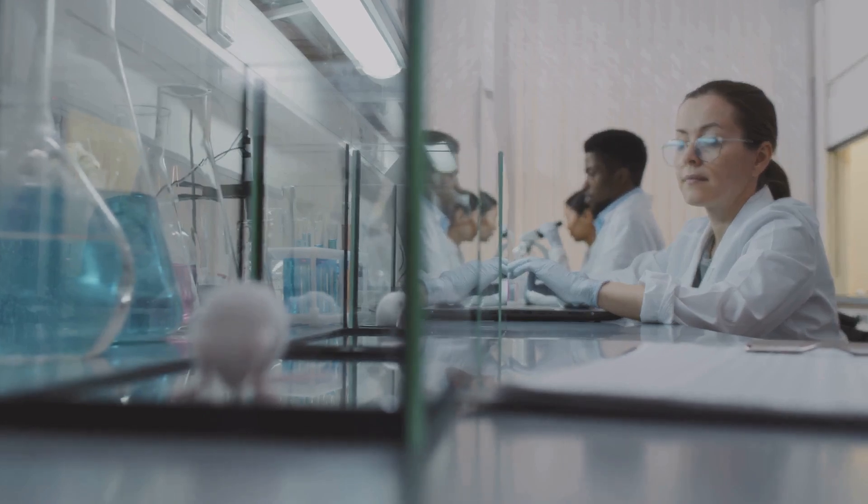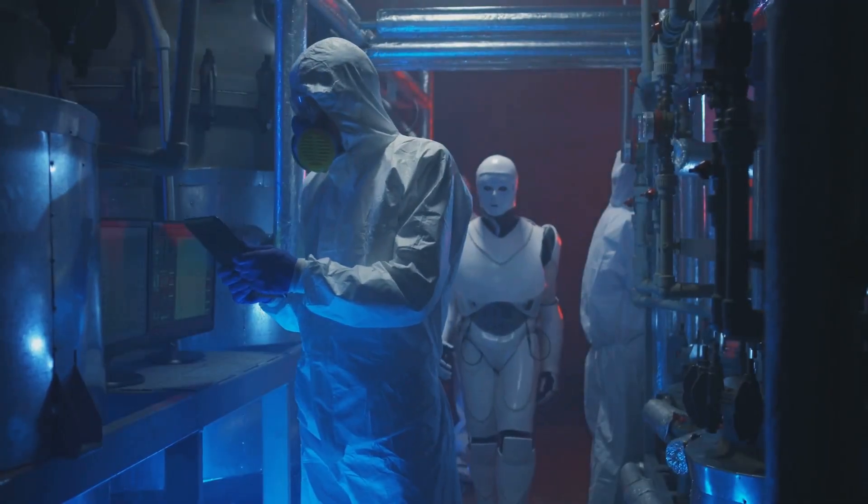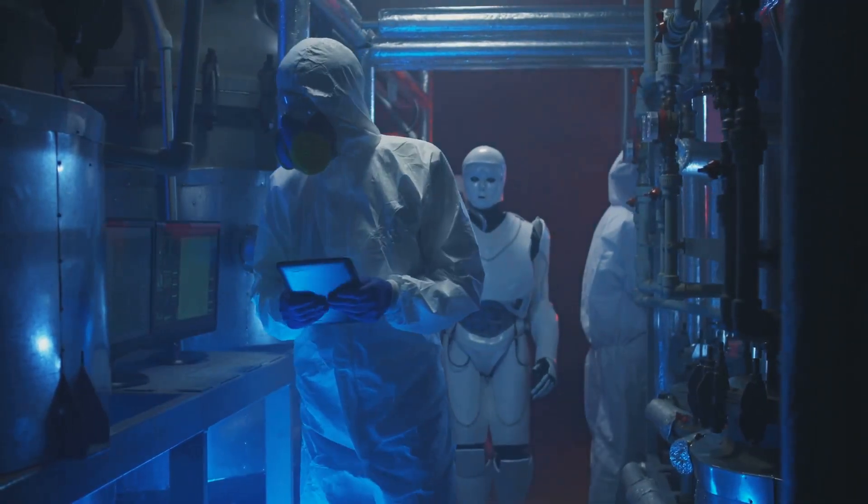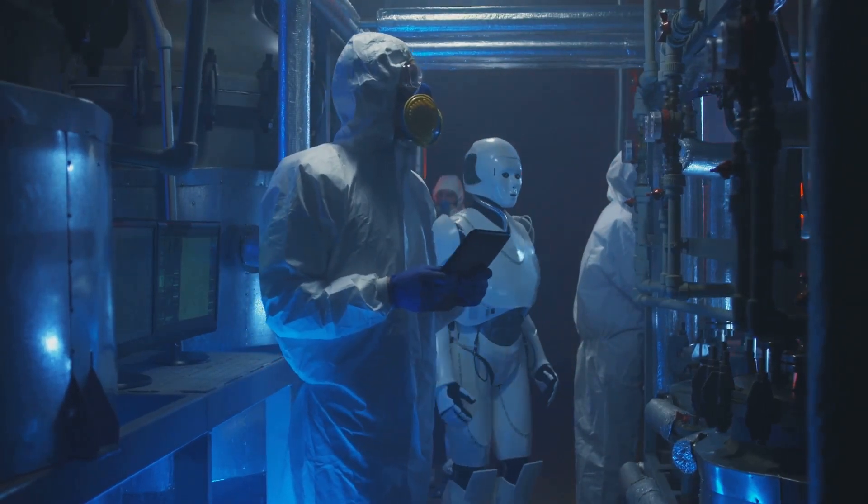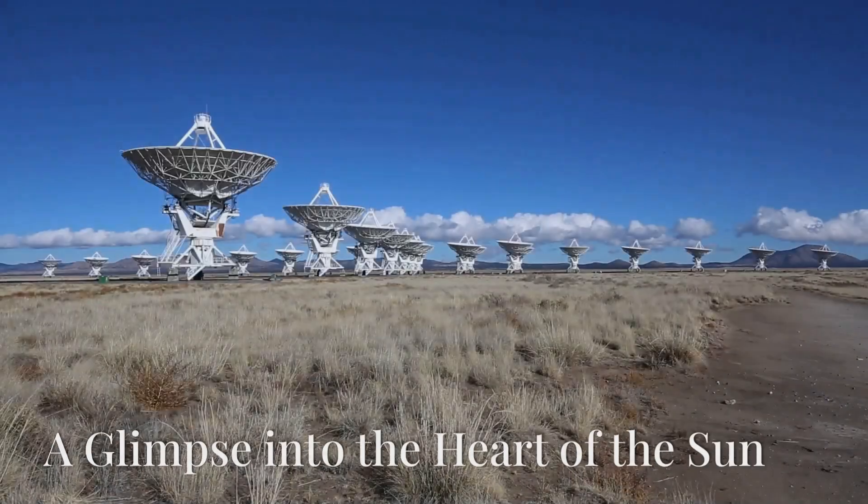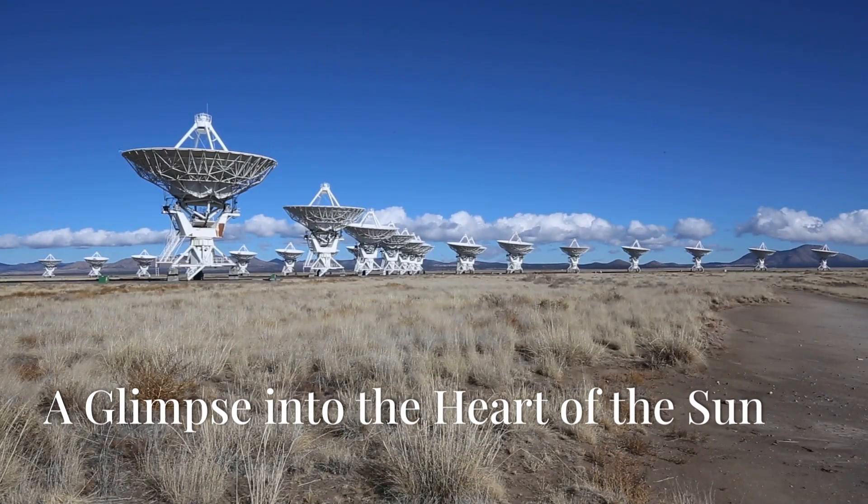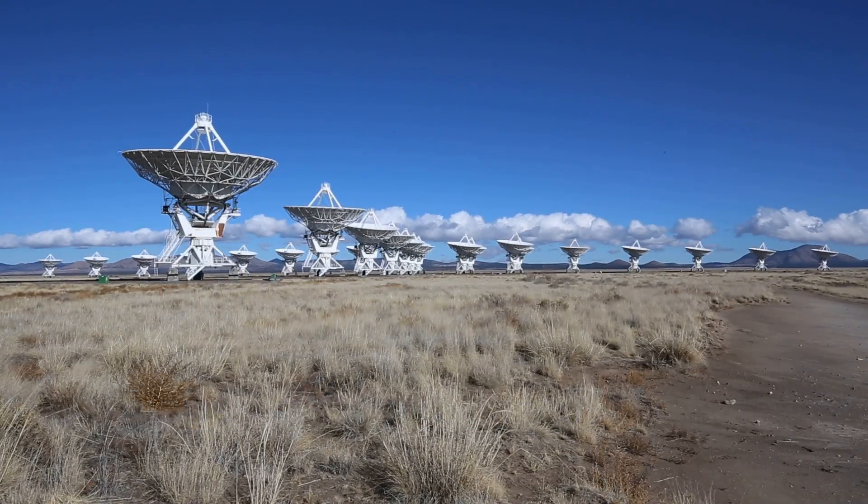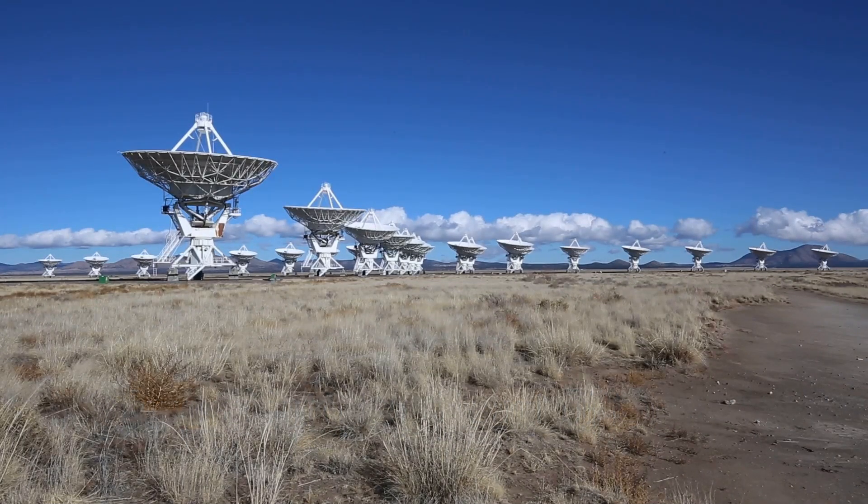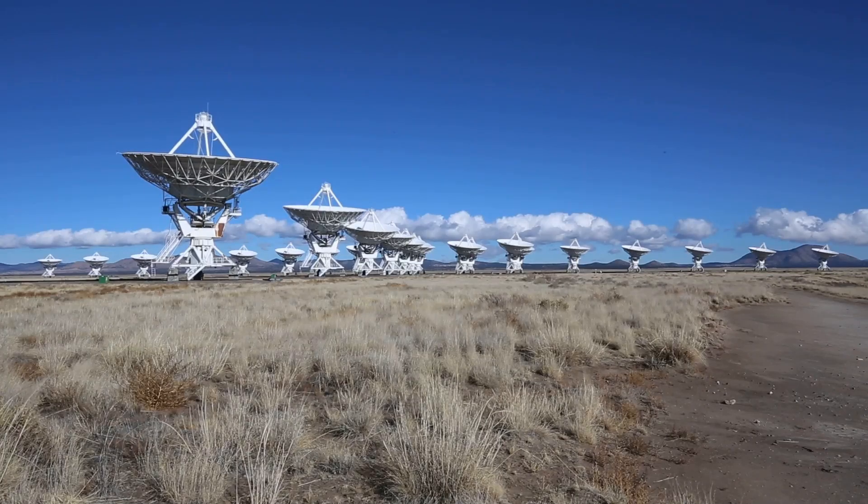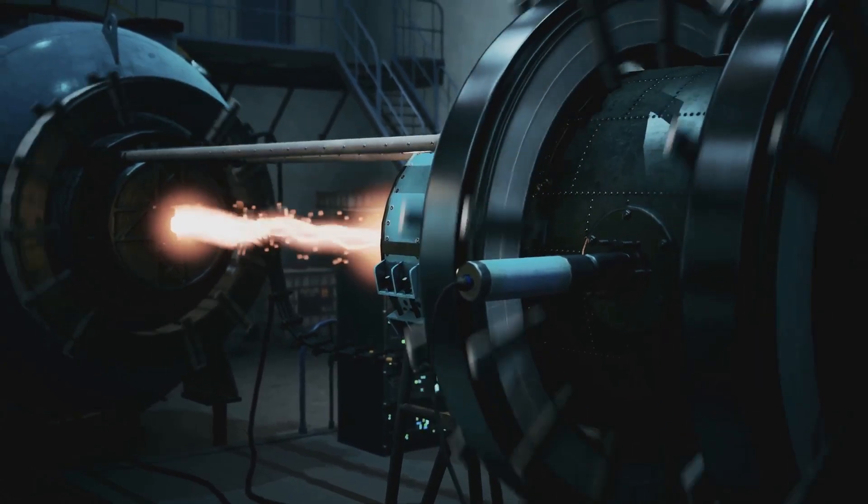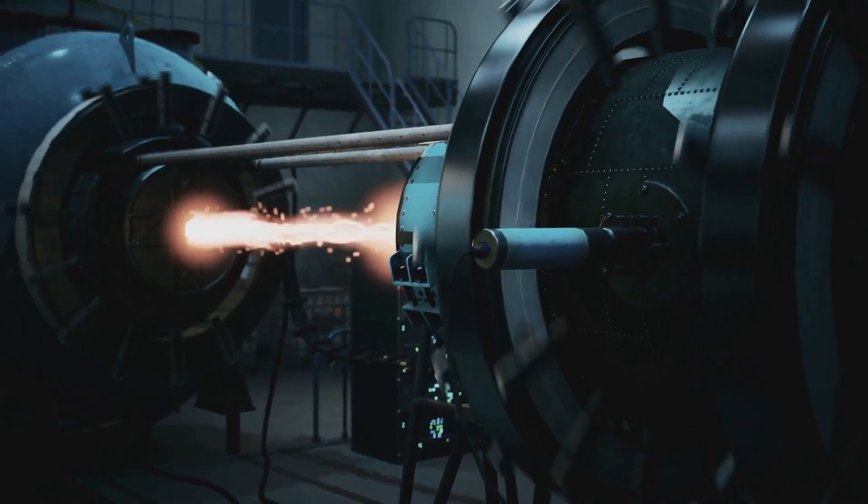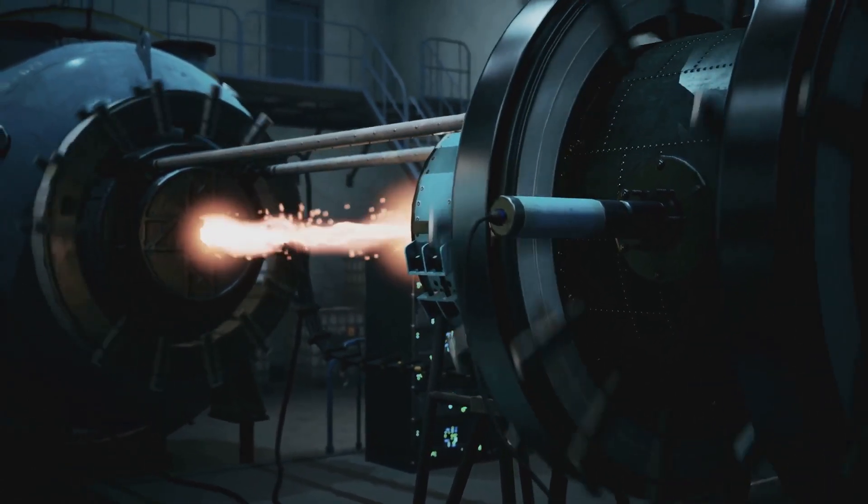But how do we know this would actually work? Enter the Z-machine, a marvel of engineering that allows us to recreate the extreme conditions of a nuclear explosion in a controlled laboratory setting. Located in Albuquerque, New Mexico, the Z-machine is the most powerful X-ray generator on Earth. It's a marvel of modern engineering, capable of producing temperatures hotter than the surface of the sun for brief, incredibly intense bursts.